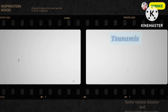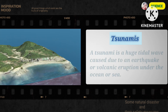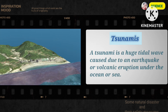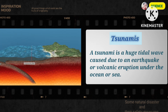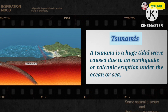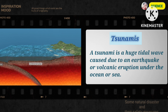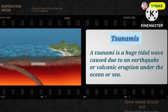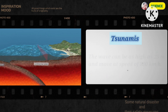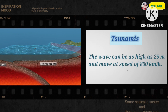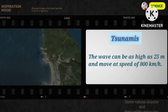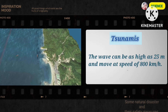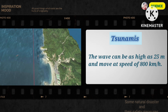Tsunamis. A tsunami is a huge tidal wave caused due to an earthquake or volcanic eruption under the ocean or sea. The wave can be as high as 25 meters and move at a speed of 800 km per hour.